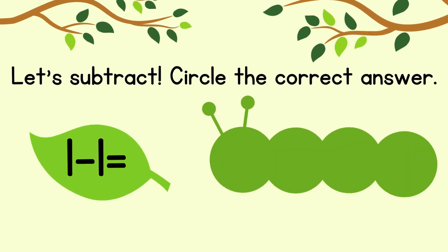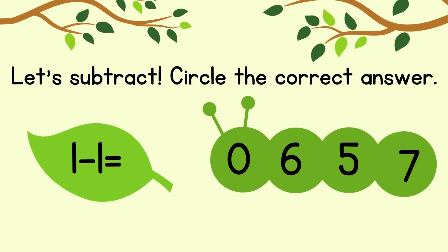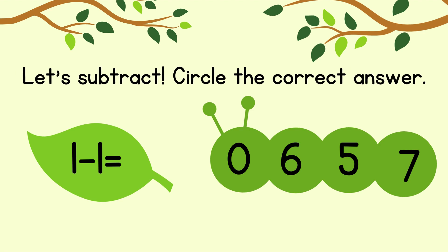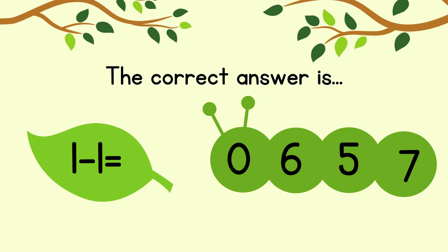Circle the correct answer. 1 minus 1 equals. The correct answer is 0.